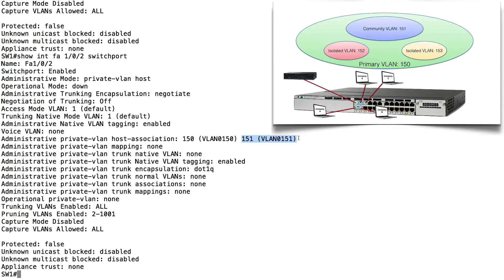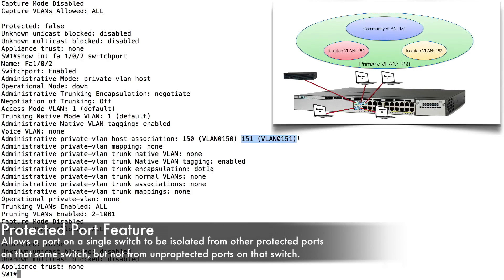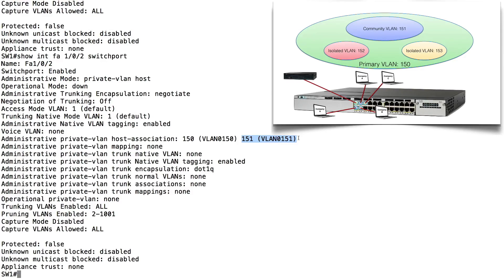However, some switches do not support Private VLANs at all — for example, the Cisco Catalyst 2950. There is a feature that can give a subset of this functionality called the Protected Port feature, also known as a PrivateVLAN Edge Port. On a switch like the 2950 or even the 3750, one Protected Port cannot communicate with another Protected Port — even though they belong to the same VLAN, they are logically isolated. There is no concept of a Community VLAN, but an unprotected port can communicate with a protected port, making it somewhat analogous to a Promiscuous Port.